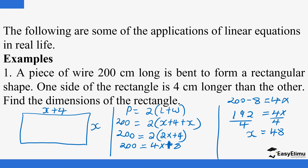Now let's answer the question: find the dimensions of the rectangle. The width is x = 48 centimeters. The length is x + 4 = 48 + 4 = 52 centimeters. So the length of this rectangle is 52 centimeters and the width is 48 centimeters.